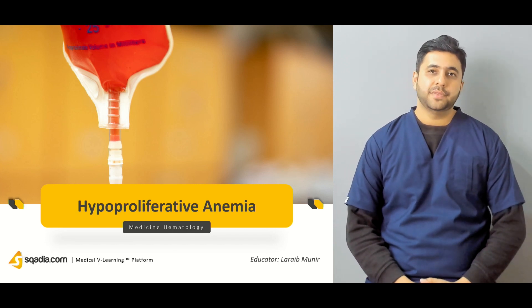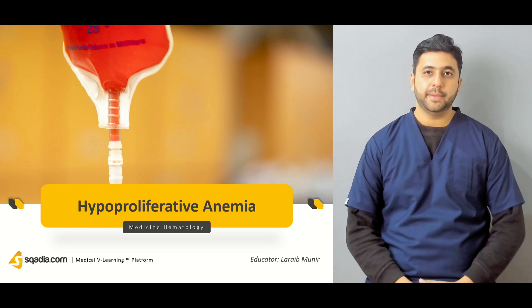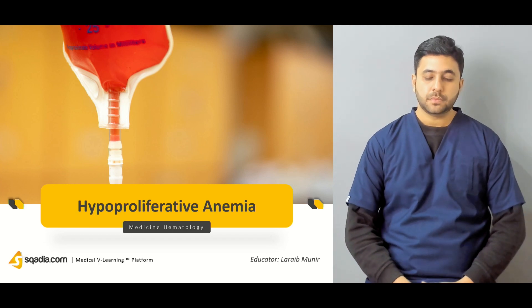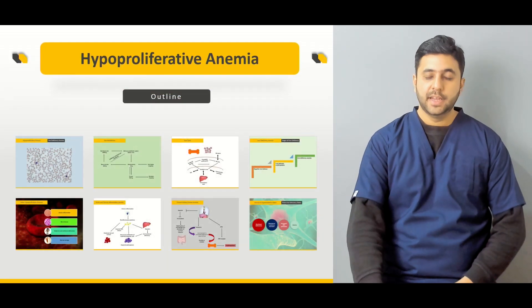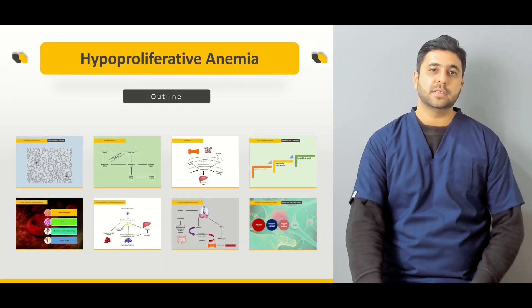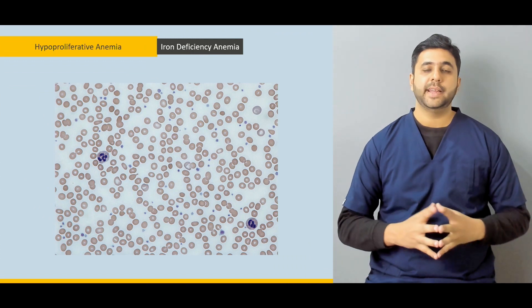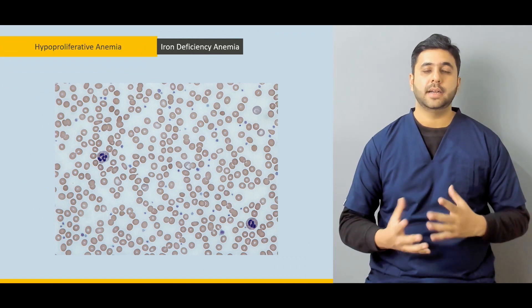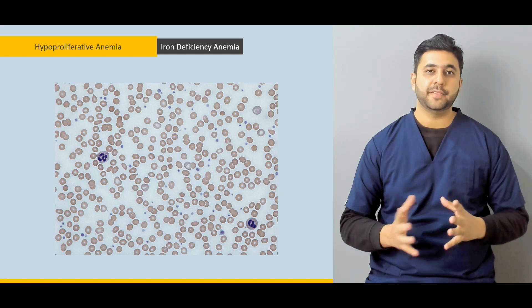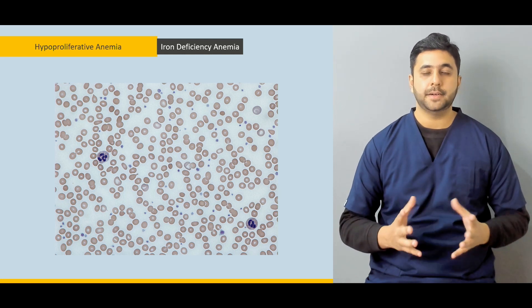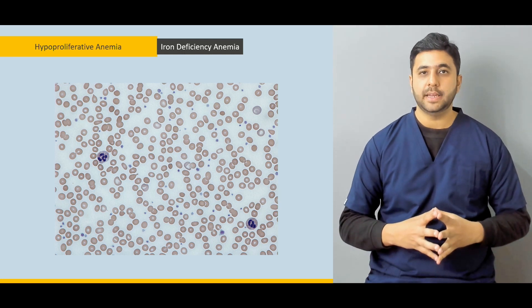There are various types of anemias and a major topic of discussion today are the hyperproliferative anemias. Let me give you an outline of how we are going to proceed with this lecture. We are going to start off by defining what are the hyperproliferative anemias, what are the various important markers that have to be present for the definition of the hyperproliferative anemias to be met, and then what are the various conditions that can lead to hyperproliferative anemias.